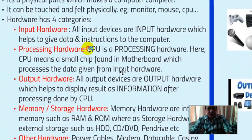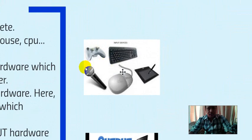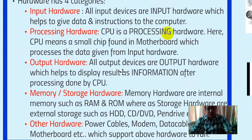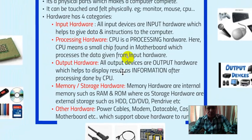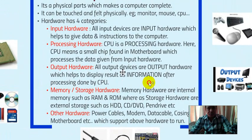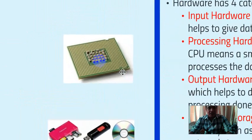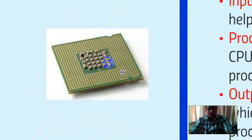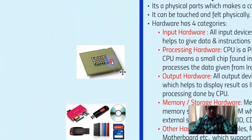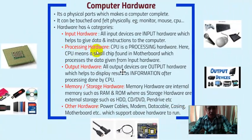The second category is processing hardware. The CPU — Central Processing Unit — is processing hardware. Here, CPU means a small chip found in the motherboard which processes the data given from input hardware. When you say CPU, you might think of the big box casing, but actually CPU is the small chip inside. Whatever you type or click goes to this chip and it processes — that is called processing hardware.